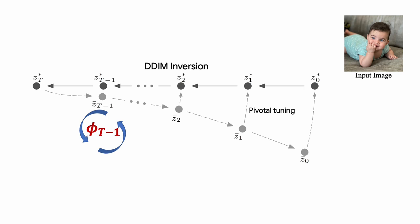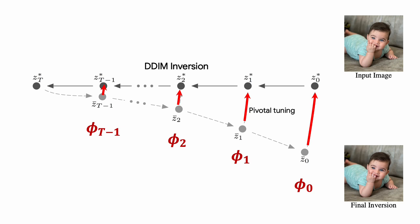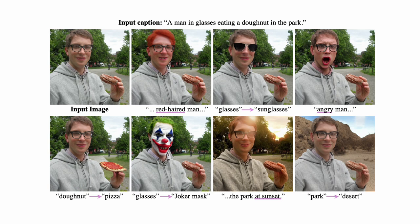Putting it all together, we kick things off with zt and for each timestamp tweak the null text embedding to get as close as possible to the latent codes we got from the initial DDIM inversion. These optimized embeddings are then used at inference to faithfully reconstruct the image.